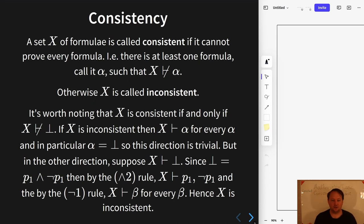Now in the other direction let's assume that X can prove falsum and then use that to prove that X can prove every formula. Well if X can prove falsum and falsum as we've said before is syntactic sugar for this canonical contradiction, then we can use conjunction rule two to split that up. We can then use negation rule one to derive any formula.